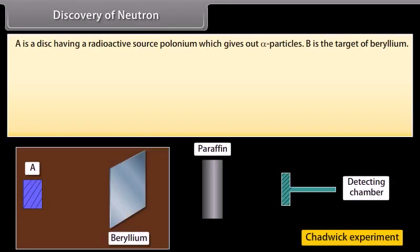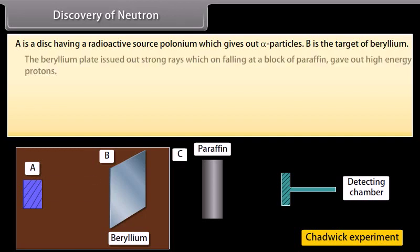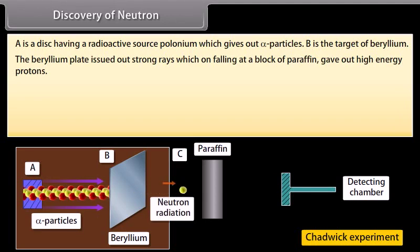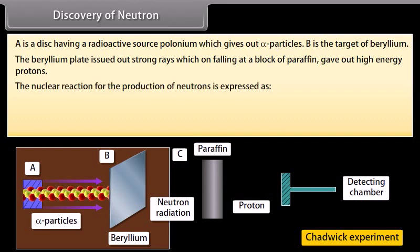Discovery of neutron. A is a disk having a radioactive source polonium which gives out alpha particles. B is the target of beryllium. Both A and B are placed in an evacuated chamber C. The beryllium plate issued out strong rays which on falling at a block of paraffin gave out high energy protons. The nuclear reaction for the production of neutrons is expressed as...